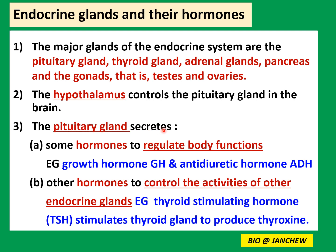The pituitary gland secretes a number of hormones, some of which regulate body functions directly. For example, growth hormone (GH) stimulates the growth of bones and tissues, and antidiuretic hormone (ADH) stimulates the reabsorption of water from the nephron into the blood. The pituitary gland also secretes hormones to control other endocrine glands — for example, thyroid stimulating hormone (TSH) stimulates the thyroid gland to produce thyroxine.